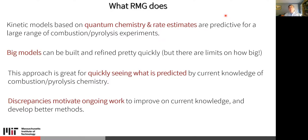This approach is really good for quickly seeing what current knowledge and current rate coefficient estimates would predict — it doesn't mean the results will be perfectly true because our current knowledge is imperfect. You can get a prediction quickly and then compare to experiments; discrepancies often reveal something wrong with our current understanding of the chemistry. When we find discrepancies between RMG model predictions and experimental observations, that can motivate additional work to identify the source, sometimes leading to advances in knowledge or improvements in the software.